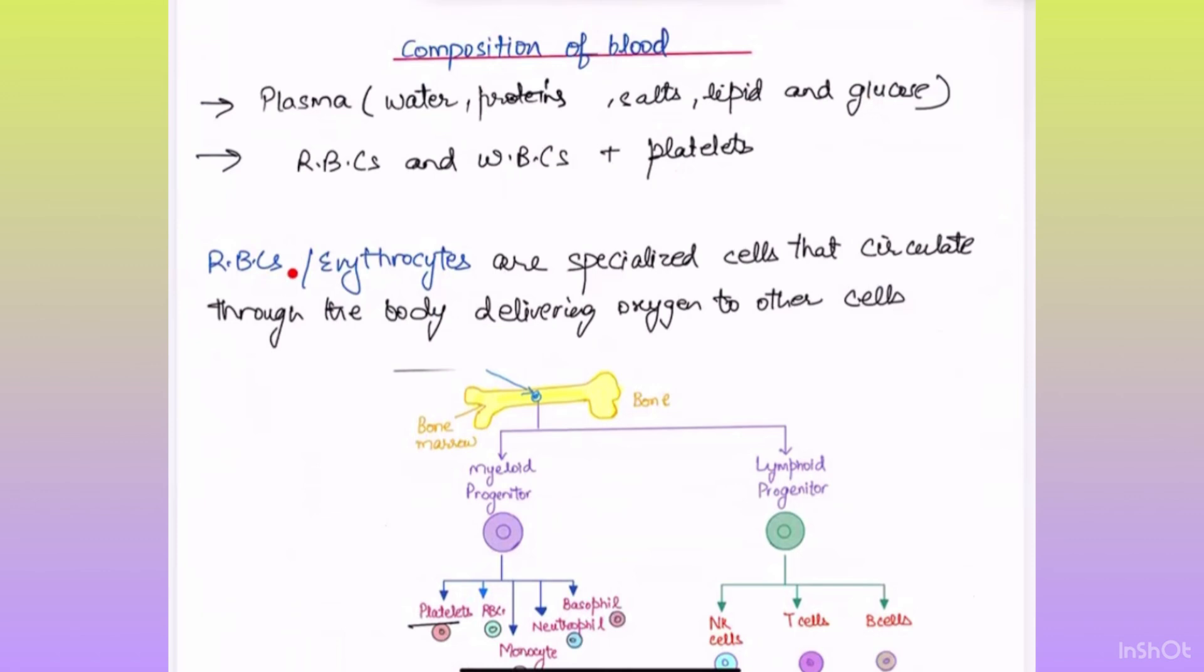RBCs are also called red blood cells or erythrocytes. They are specialized cells that circulate through the body delivering oxygen to other cells.